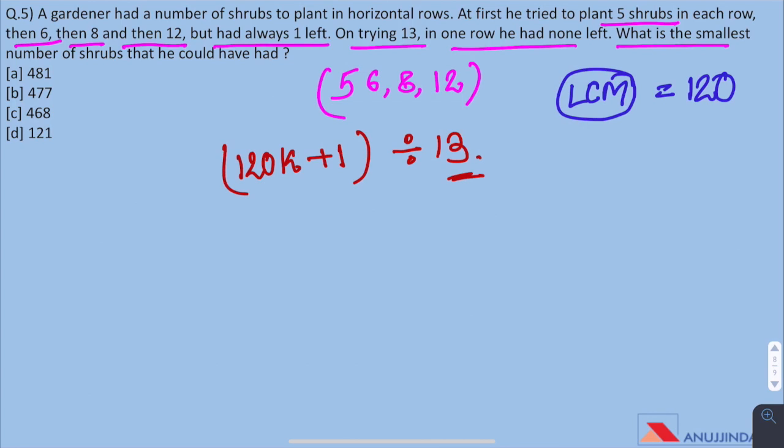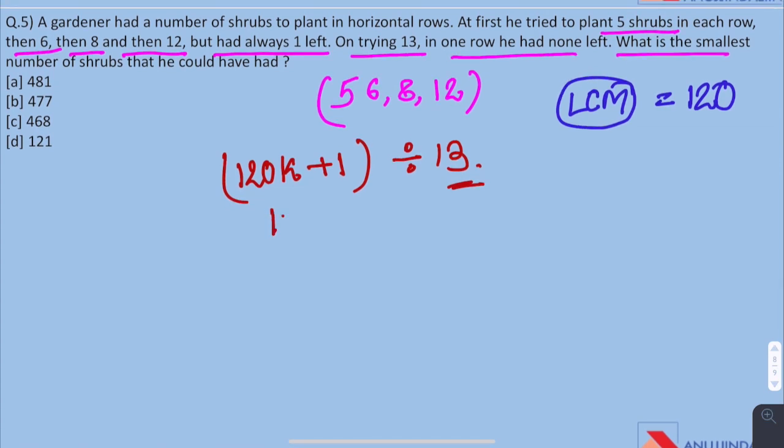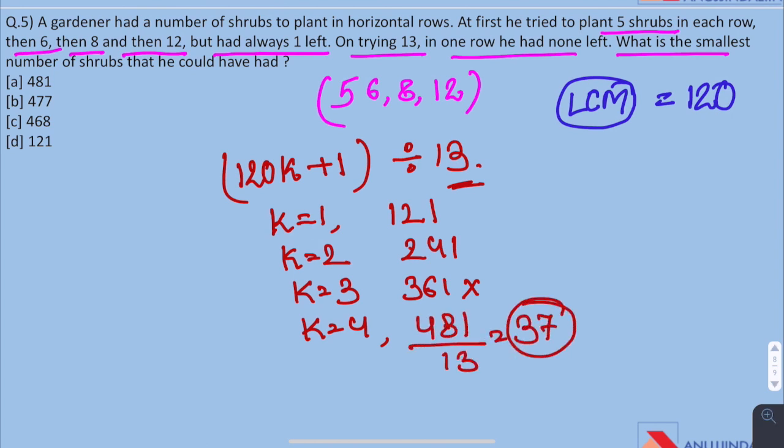So we will put values of K and try what is the minimum number of shrubs that he could have. On putting K equals 1, we get 121 which is clearly not divisible by 13. If K is 2, then we get 241, still not divisible by 13. K is 3, 361, not divisible by 13. When K is 4, we get 481 which is divisible by 13 and hence the smallest number of shrubs he could have is 481. And 481 gives remainder of 1 when divided by 5, 6, 8 and 12 respectively.